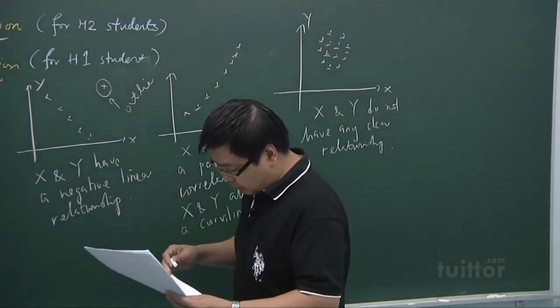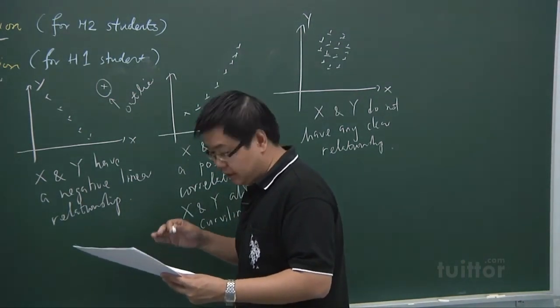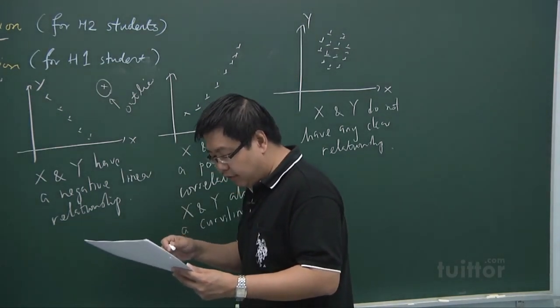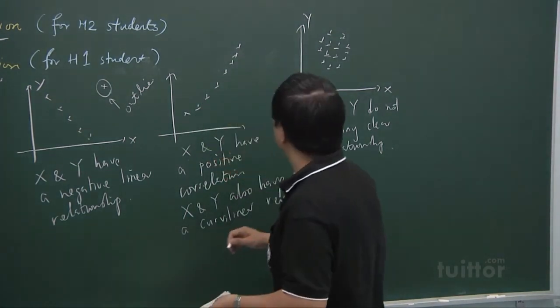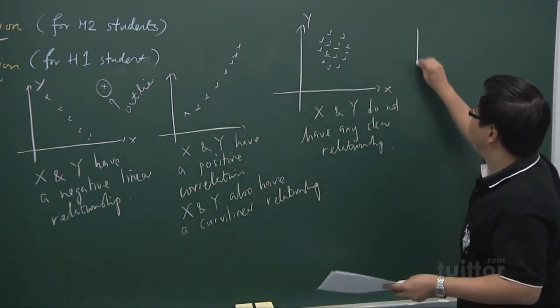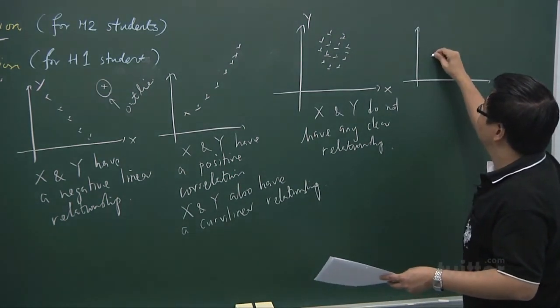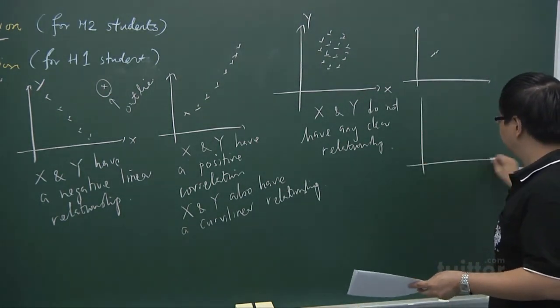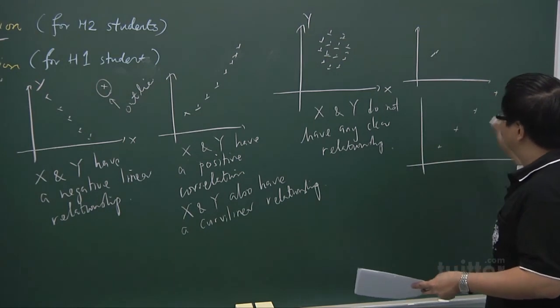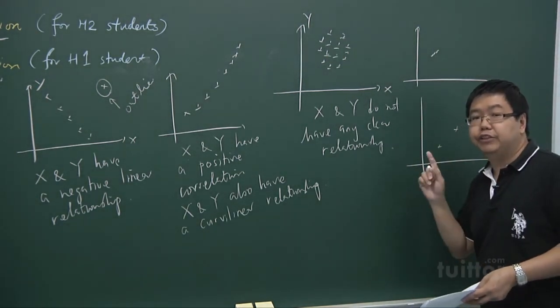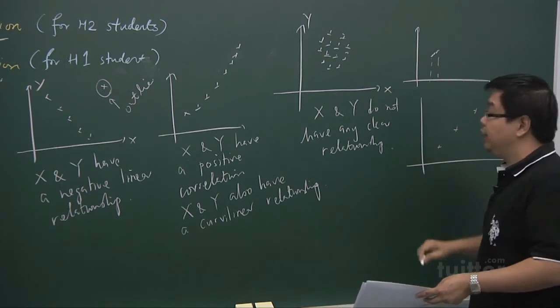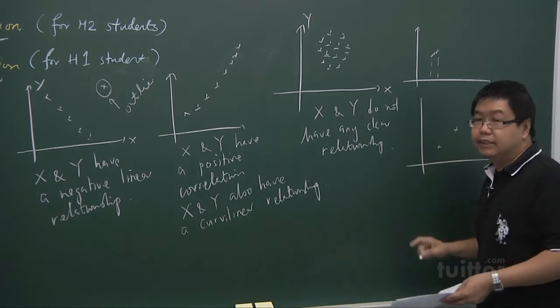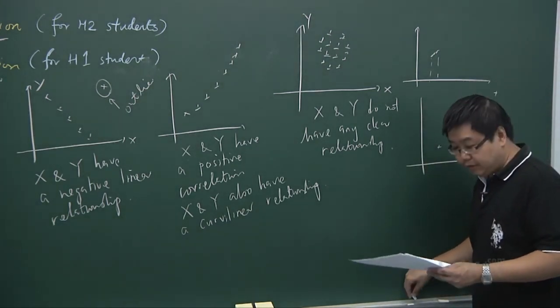In a sense, interpretation of the strength solely based on the scatter diagram is subjective. And it can even be deceiving when different scales for the axes are used. For example, points like this that are very closely together can actually be converted to this manner by just a change of the scale. So you have to be able to see by yourself whether the scale is a suitable one to represent the set of data.